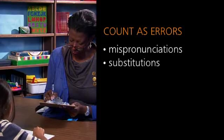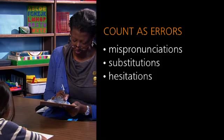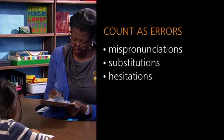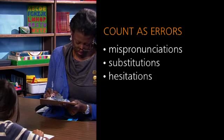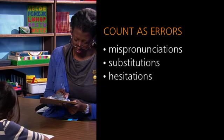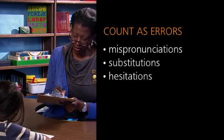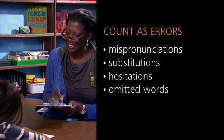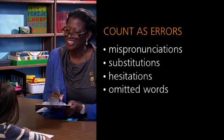Another error we look for is hesitations. A student doesn't know a word and struggles with it. We generally recommend giving that student about three to five seconds to attempt the word. If they can't get it, the teacher can pronounce that word for them, and that is considered an error. Omitted words—each omitted word counts as an error.